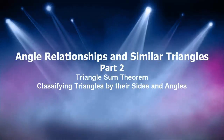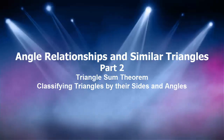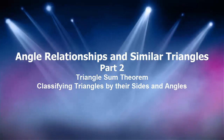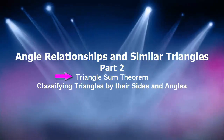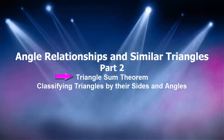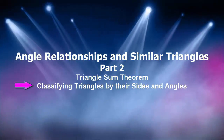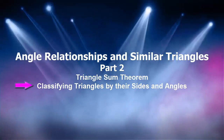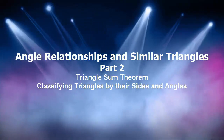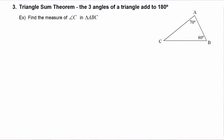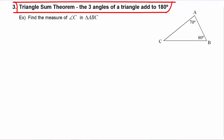In part two of our lesson on angle relationships and similar triangles, we're going to review how to use the triangle sum theorem and how to classify triangles by their sides and angles. Back in your geometry class you learned the triangle sum theorem, which states that the three angles of a triangle add to be 180 degrees. Now let's take a look at why that happens.